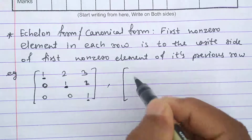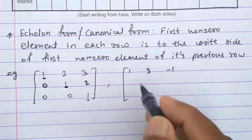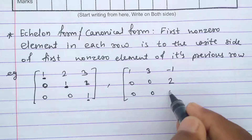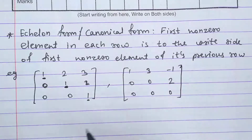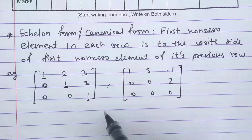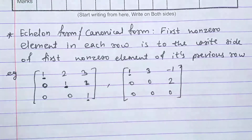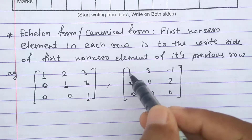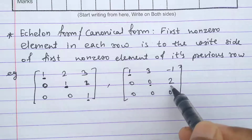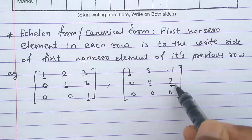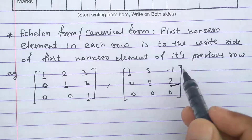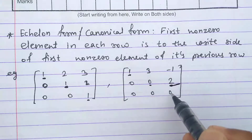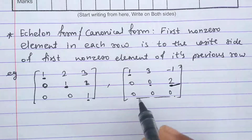Another example: the matrix [1, 3, −1; 0, 0, 2; 0, 0, 0]. In the first row the first non-zero element is in column 1. In the second row the first non-zero element is in column 3, which is to the right of column 1 — condition satisfied. In the third row there is no non-zero element, so the condition is also satisfied. This matrix is in echelon form.